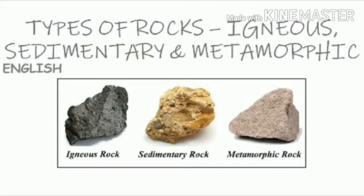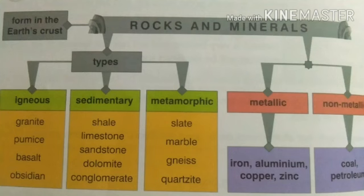Rocks can be classified into three groups: igneous rocks, sedimentary rocks and metamorphic rocks. They differ in the method of their formation, their degree of hardness, texture, color and in their chemical composition.